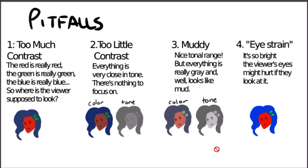When it's muddy, there is a nice tonal range, but everything is really gray — it's in between being a proper gray and being a color that pops out. So it's just in this in-between zone where it all becomes muddy and blends together.